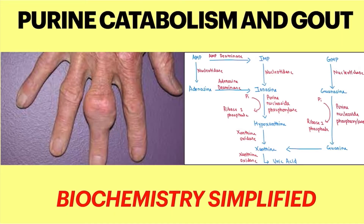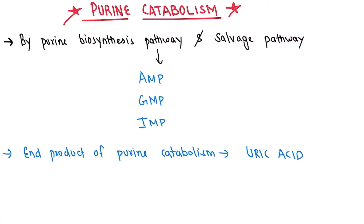Hello friends, my name is Mohamed Imran, I am a second year MBBS student. In this video, we are going to study about purine catabolism — that is the degradation of purine nucleotides — and gout, which is very important for the biochemistry exam. If you are a first year MBBS student, I recommend you watch this video from start to end for better understanding. Let's start with purine catabolism.